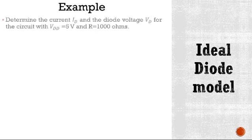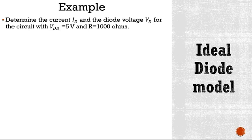Now look at this example. You have to determine the diode current Id and the diode voltage Vd for the circuit where Vdd is 5 volts and R is 1 kilo ohm. So how are you going to analyze this?